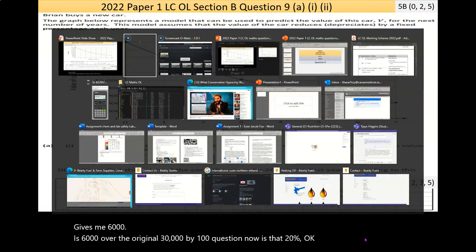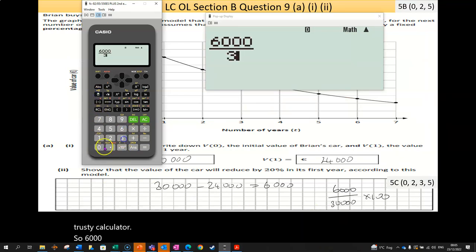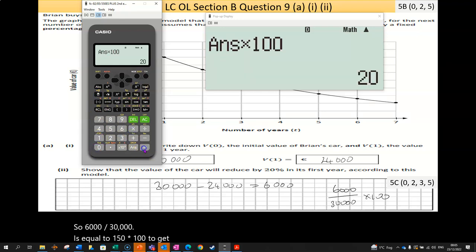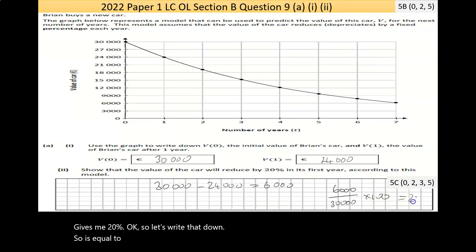If I bring up my trusty calculator, 6,000 over 30,000 is equal to one fifth, multiplied by 100 to get percentage, gives me 20%. So it's equal to 20%. I don't have much space there, but you could say verified or true or something in the affirmative that it is 20%.